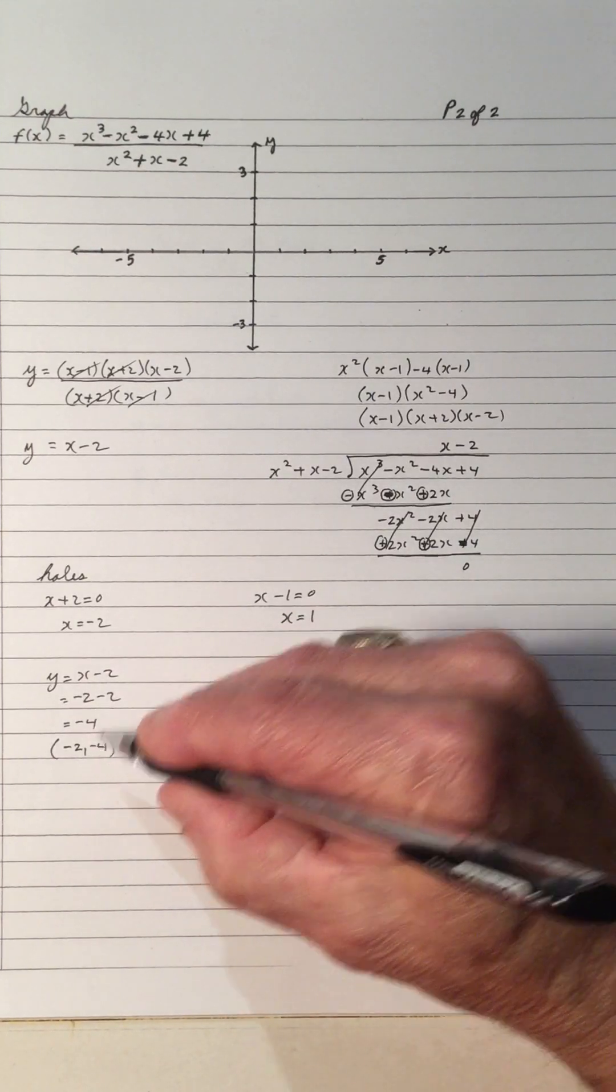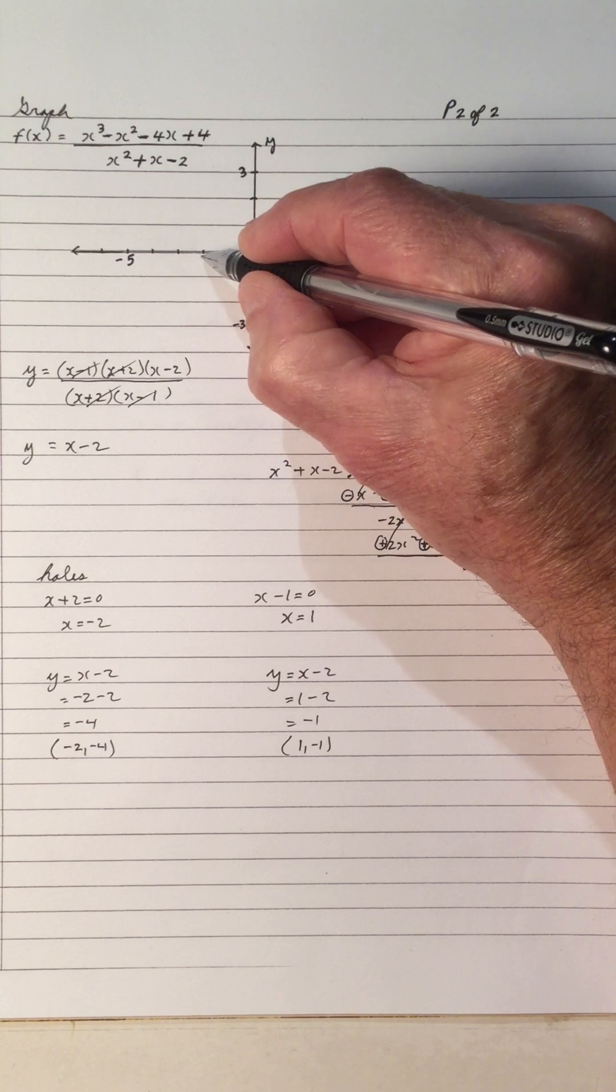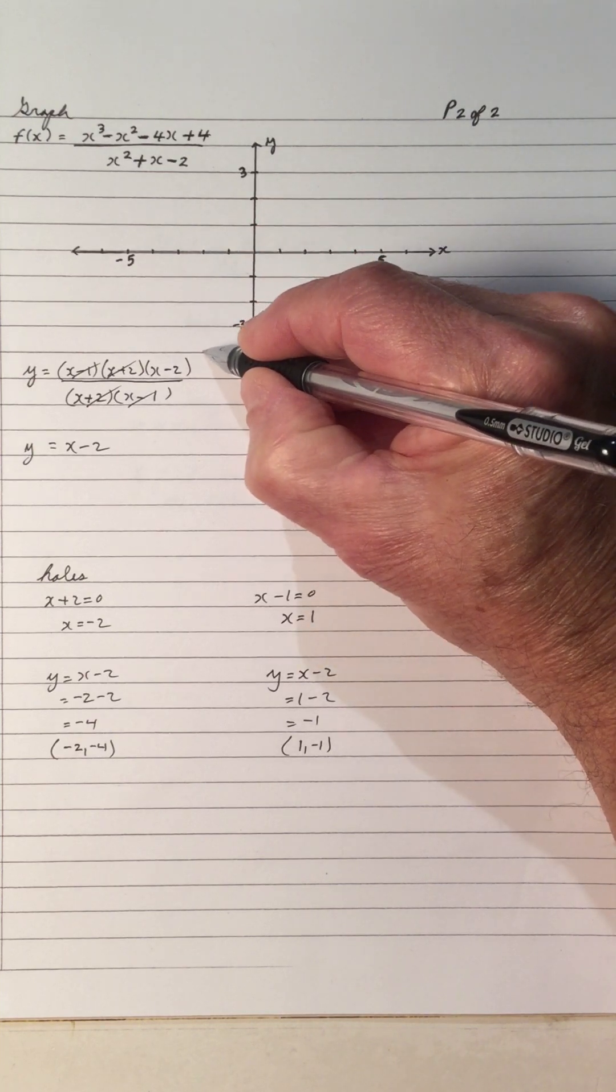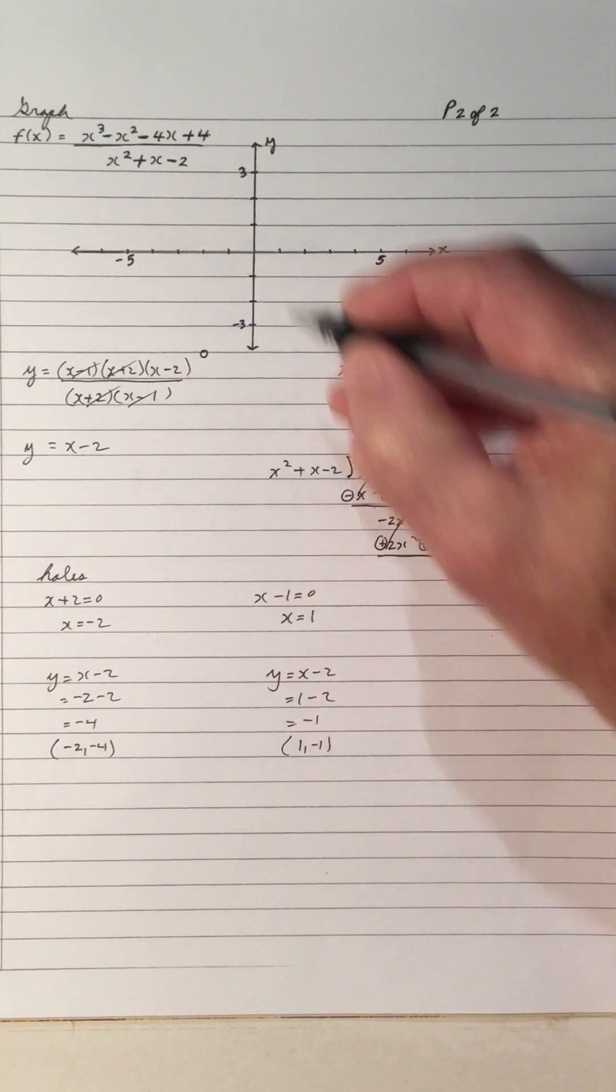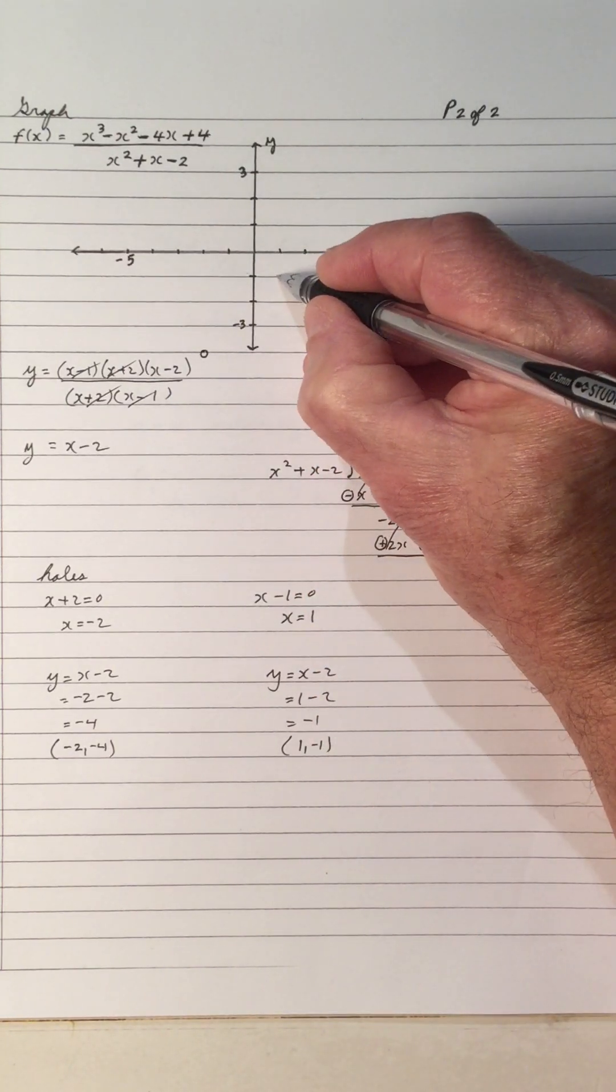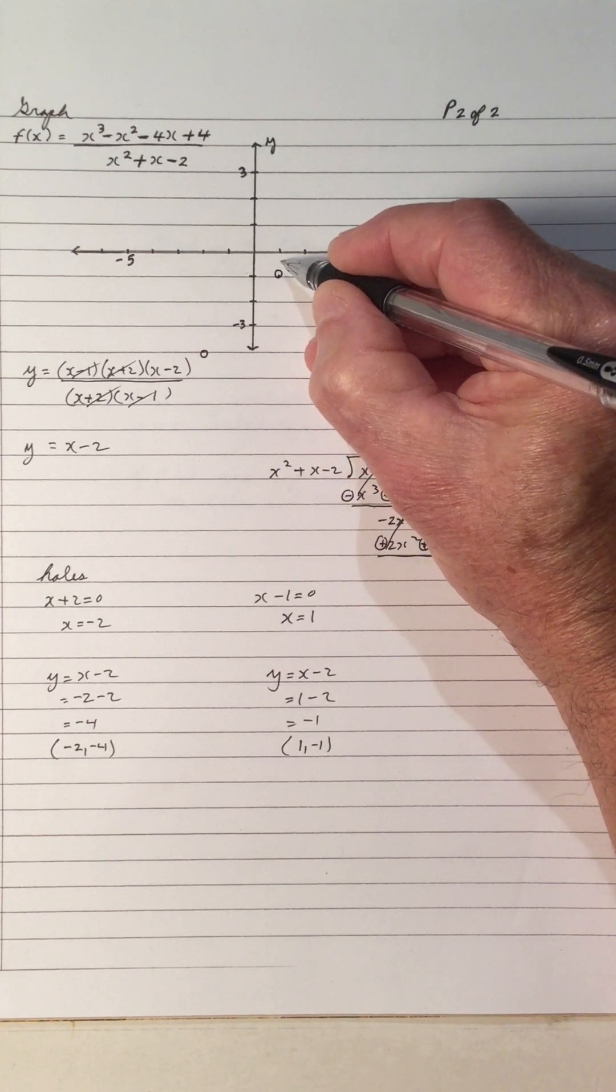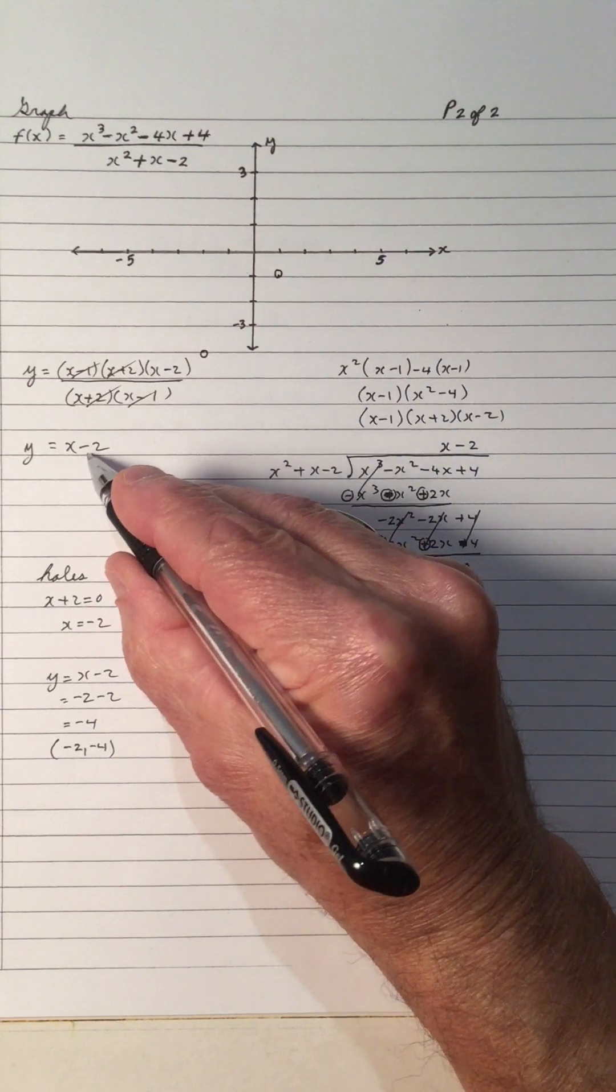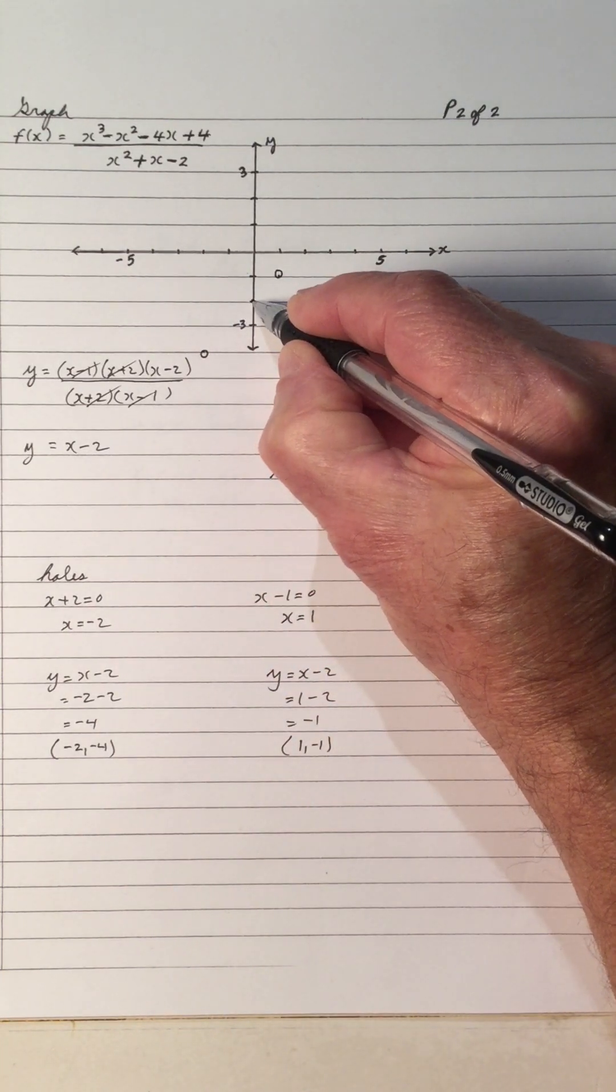So let's plot the holes first. So there's a hole at negative 2, here, negative 4, right here. And there's also a hole at 1, negative 1. 1, negative 1, there's a hole right here. So let's plot this line. It has a y-intercept of negative 2, which is right here.